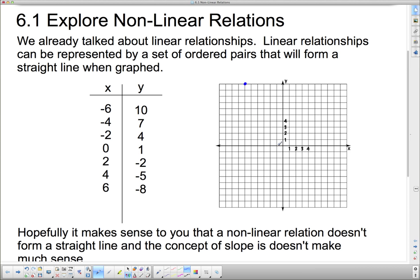And then negative 4, 7 is right there. And negative 2 and 4 is right there. And 0 and 1 is there. 2 and negative 2 is there. 4 and negative 5 is there. And 6 and negative 8 will be right there.